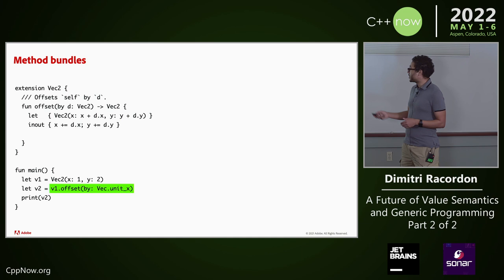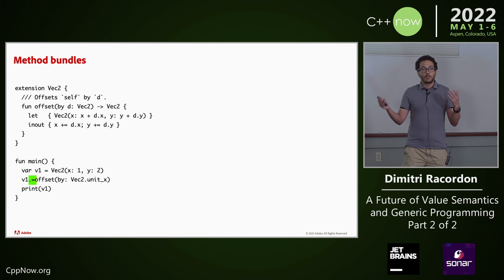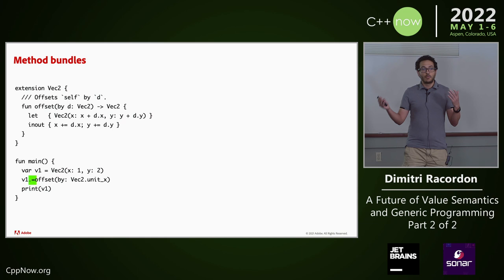What if I want to call the in-out version? If I have this notation — the dot followed by an equal — this resembles a self-assignment, and so that is an in-place offset of my vector.